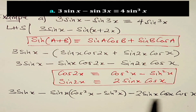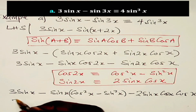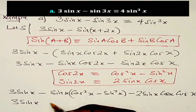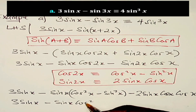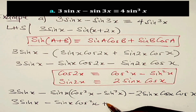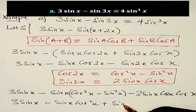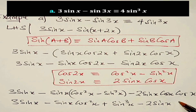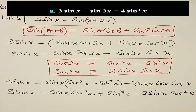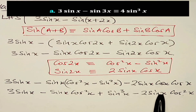Now we shall expand what we have. We get 3 sine x minus sin x cos²x plus sin³x minus 2 sin x cos²x. Now we have like terms — this term and that term — so we are just going to add them up.